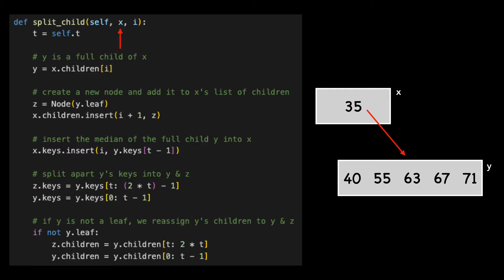It takes a non-full internal node X and the index of a full child I. The method splits the child into two nodes and updates X so that it has a pointer to the new child.